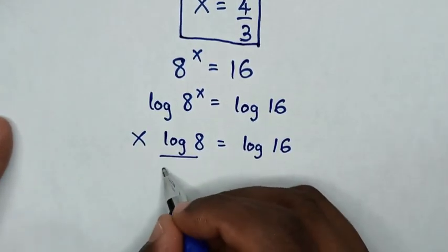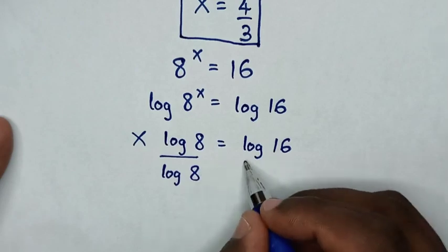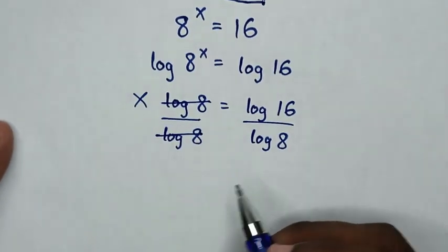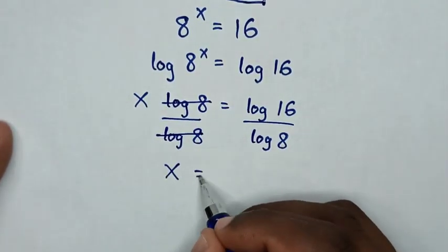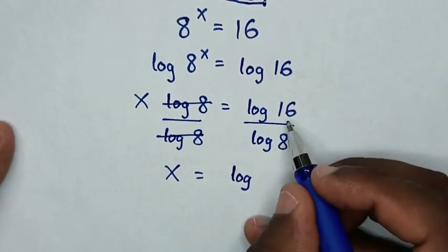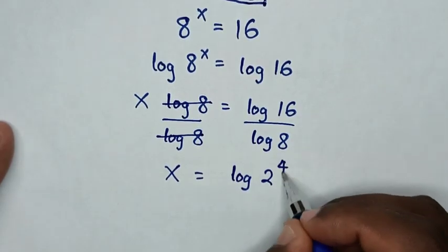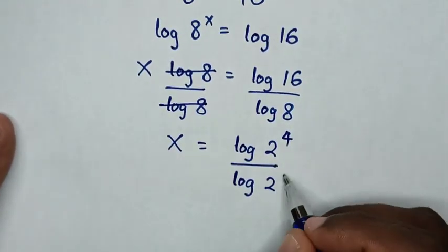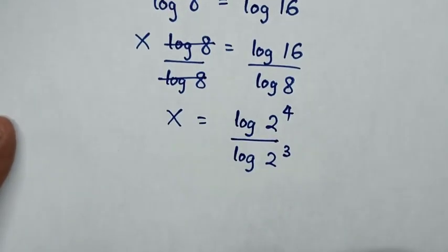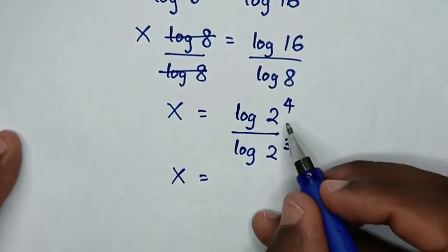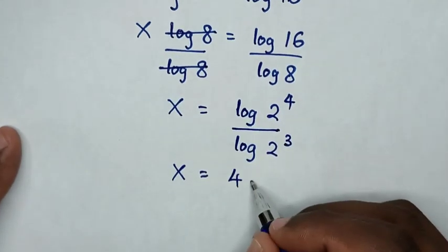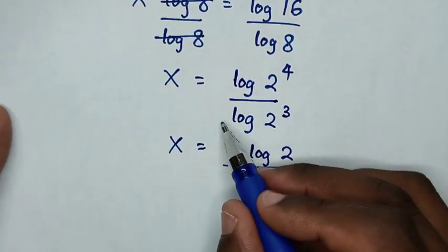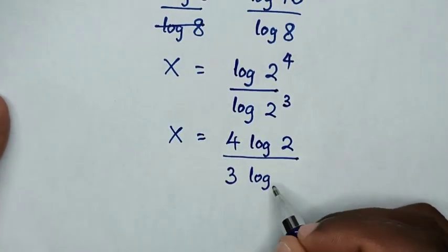In the next step, we divide by log of 8 on both sides. This log of 8 will cancel. Then x is equal to log of 16, which is the same as 2 power 4, over log of 8, which is the same as 2 power 3. The power of 4 will move to the base, giving 4 log of 2, and the power of 3 will move to the base, giving 3 log of 2.